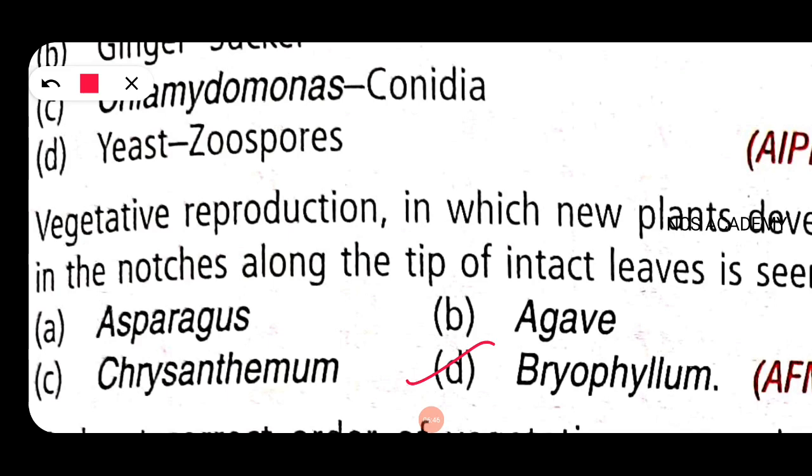Why are we talking about leaves? Leaves of many plants have adventitious buds that help in vegetative propagation. For example, begonia, bryophyllum, adiantum - this is the adventitious buds. In bryophyllum, the buds develop into marginal notches of intact leaves, which form new plantlets.